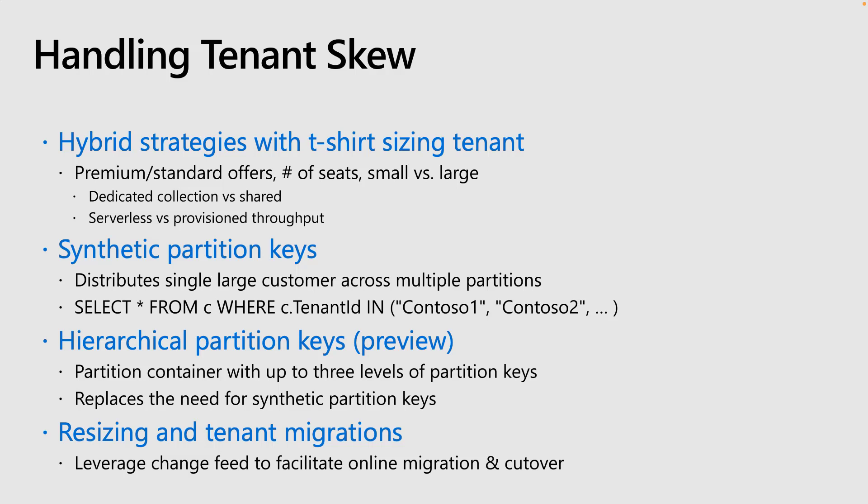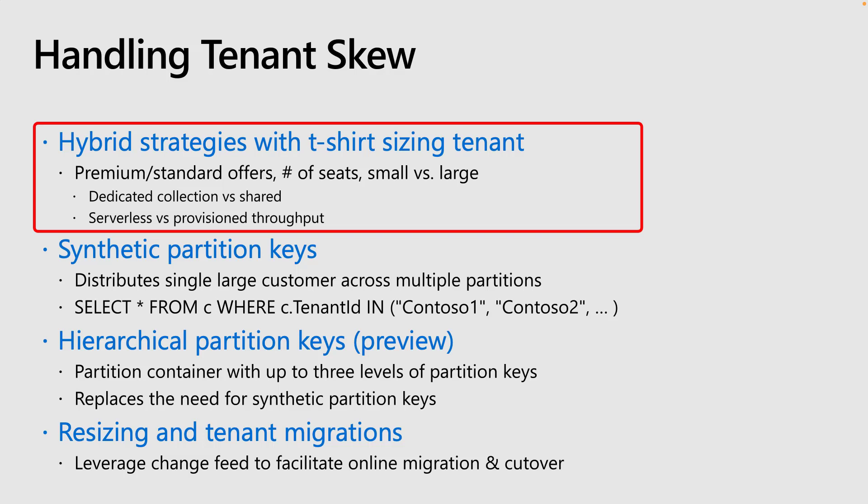It's common that a SaaS provider has many customers of many different sizes. This is generally described as tenant skew and can refer to the throughput a tenant requires or the raw size of data for a given tenant. There are different ways to deal with tenant skew depending on your provisioning and business model. A hybrid strategy is great because it allows you to offer different tiers for your application that correlate with increased scale or features in Cosmos DB — similar to standard and premium tiers. Billing based on number of seats, users, or T-shirt sizing like small, medium, and large can help. Depending on the tier your customer purchases, you might put them in a container with dedicated throughput, shared throughput, or serverless offerings.